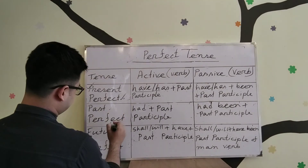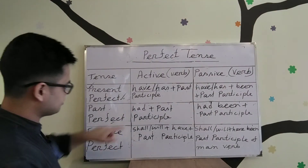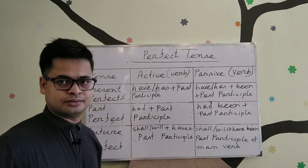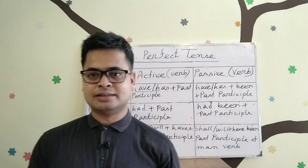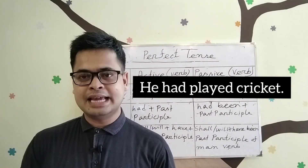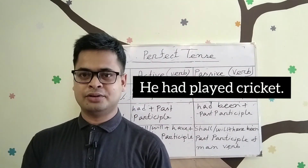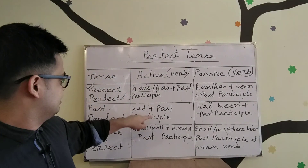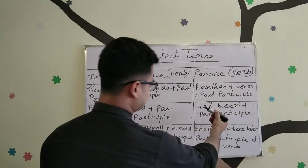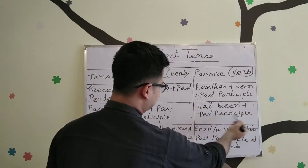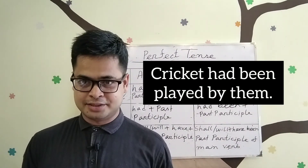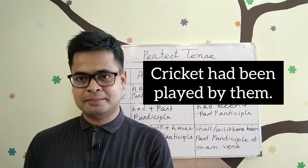For past perfect tense in active voice, we use 'had' plus the past participle. For example: 'He had played cricket.' In passive voice, we use 'had been' plus the past participle. For example: 'Cricket had been played by them.' 'Had been played' is the passive verb form for past perfect tense.